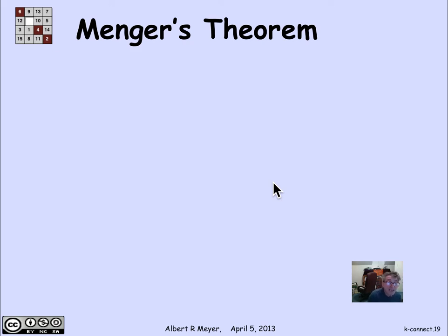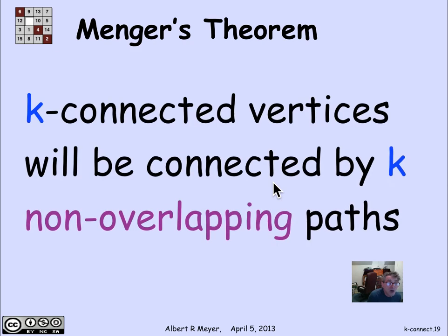Menger's theorem says that a graph is k-vertex connected if and only if you can connect any two vertices with completely non-overlapping different paths, k of them.